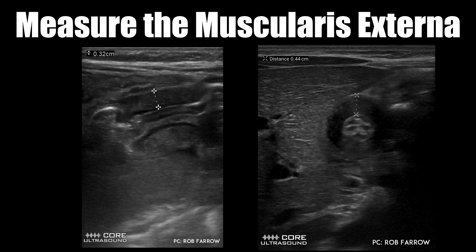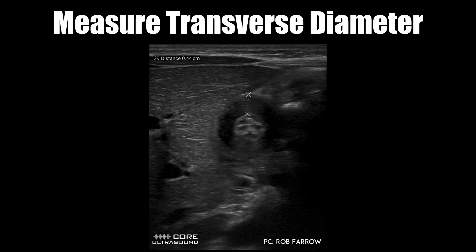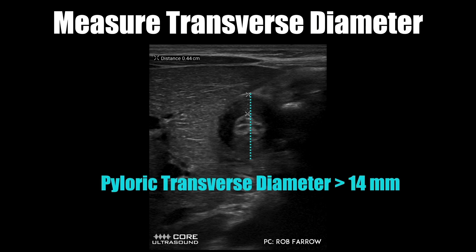The first thing you'll likely want to measure is the muscularis externa. This is the most accurate and most reproducible measurement when diagnosing pyloric stenosis, and you can measure this in the long and in the transverse axis. We have to remember our sonographic anatomy and make sure we're not including the serosa, the muscularis mucosa, or the submucosa in our measurement — we are focusing solely on the thickness of the muscularis externa. When you look at the transverse diameter, keep in mind we're looking at the entire diameter of the pylorus, shown here by the blue dotted line.